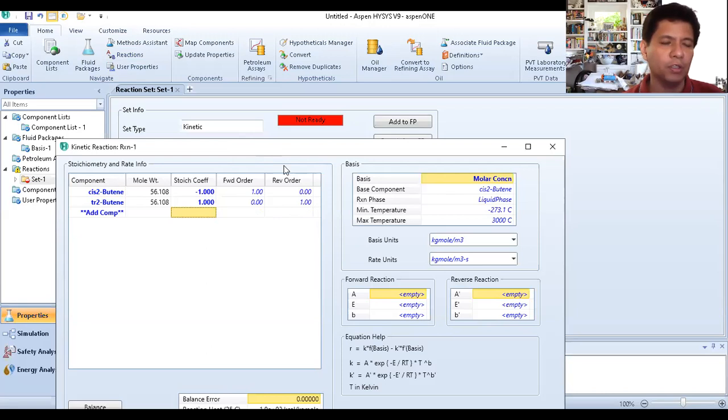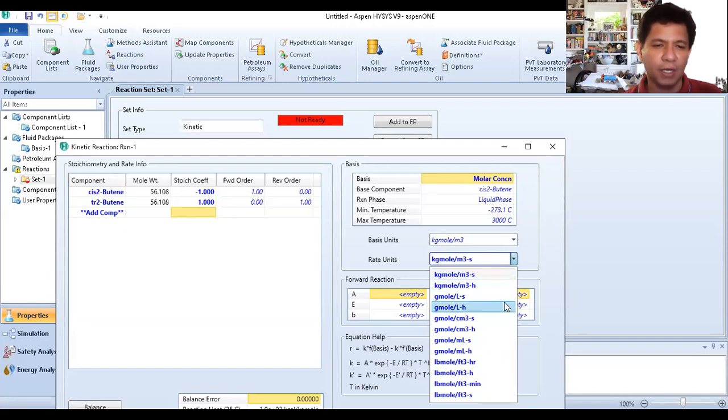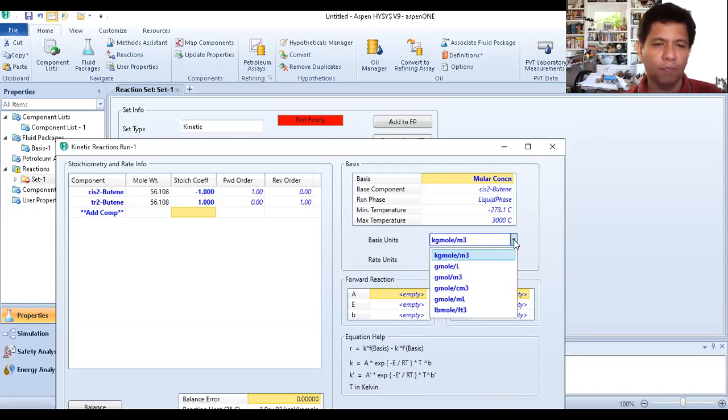The forward order and reverse order, you change these depending on the given information. The given information is that it's first order in cis-2-butene, so this is correct. Then zero order in trans-2-butene. This information is correct. For the reverse order, you can change it, but just empty the data of A for the reverse reaction. This is 0.23 per minute. Color concentration, liquid phase, cis-2-butene, that's correct. Since it's per minute, the only rate unit with per minute is pound mole per cubic foot per minute. So this is pound mole per cubic foot. Then this is 0.23. Set E to 0, there's no information, so E is 0, the activation energy.